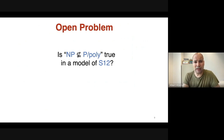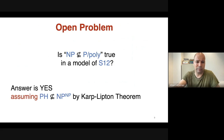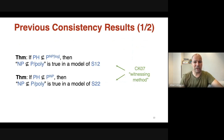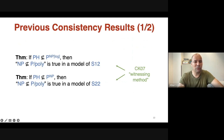These are pretty strong theories, so proving consistency results for them is very meaningful. However, the main problem — showing NP ∉ P/poly is consistent with some theory — is not even known to be consistent with the lowest theory S¹₂. The answer is yes assuming some non-collapse of the hierarchy, since in those cases the statement is actually true.